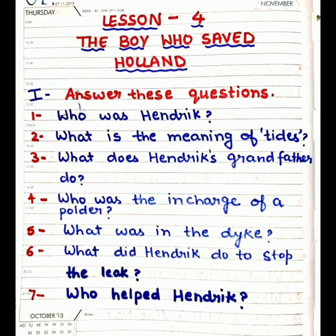Question number 5 is: what was in the dike? There was a small leak in the dike. Question number 6 is: what did Hendrik do to stop the leak? He put his small finger into the leak.